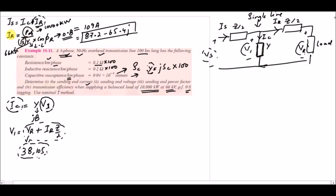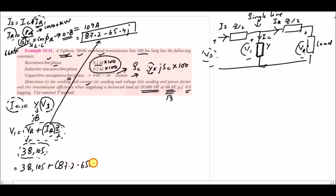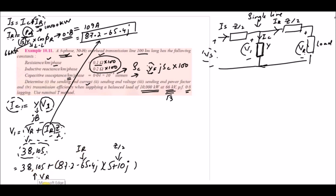When calculating receiving end current using the delivered power formula, we use line-to-line voltage or 3 times line-to-neutral voltage. Numerically, V1 = 38,105 + (87.2 − j65.4) × (5 + j10), where Z/2 = 5 + j10 is the half-impedance, giving us the value of V1 after solving.